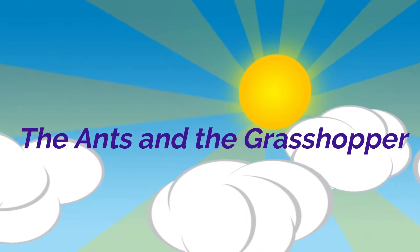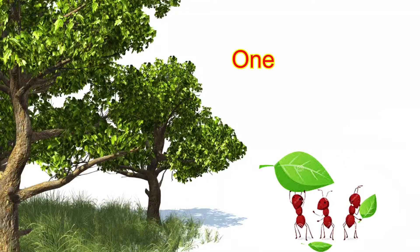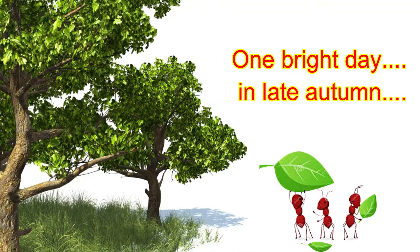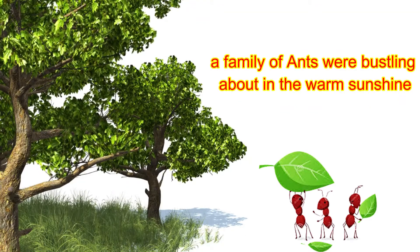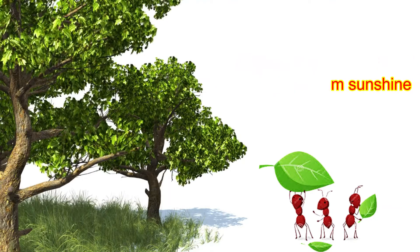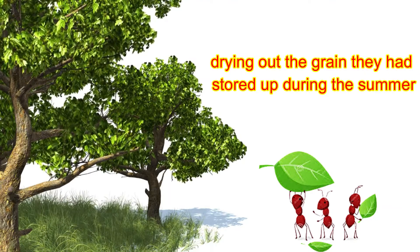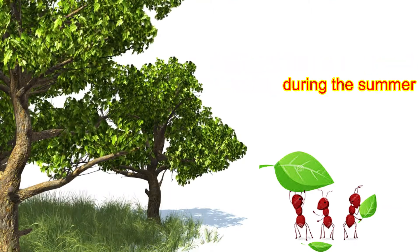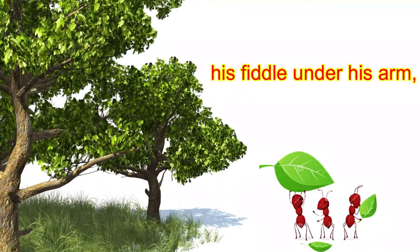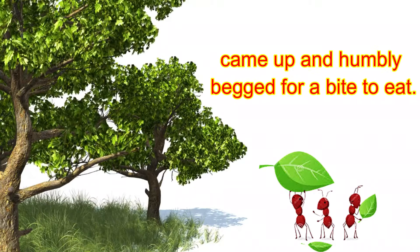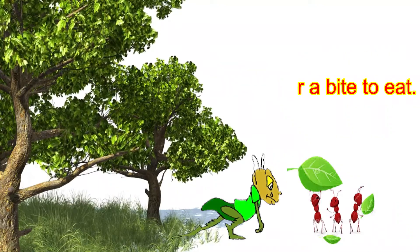The Ants and the Grasshopper. One bright day in late autumn, a family of ants were bustling about in the warm sunshine, drying out the grain they had stored up during the summer, when a starving grasshopper, his fiddle under his arm, came up and humbly begged for a bite to eat.